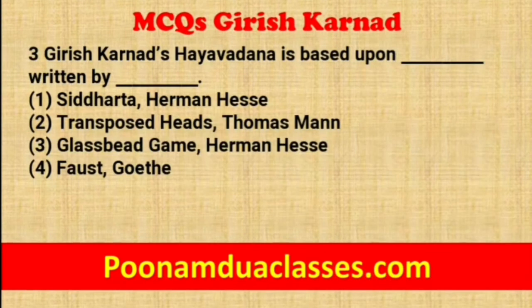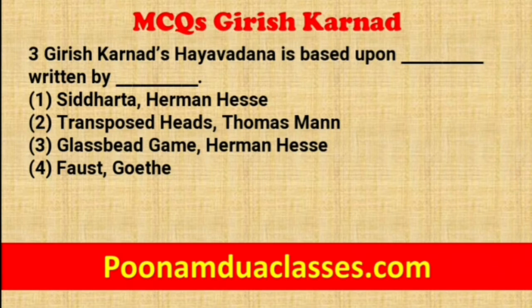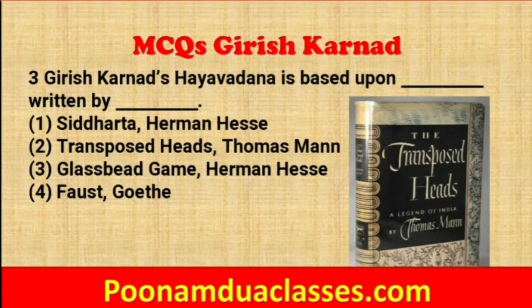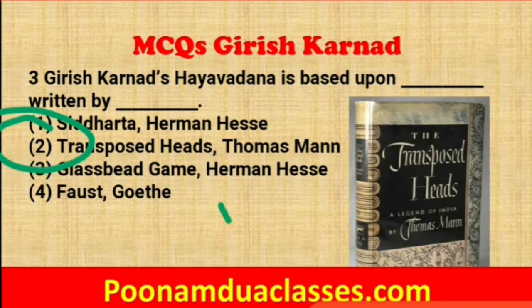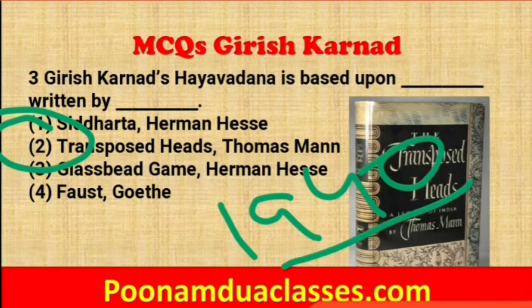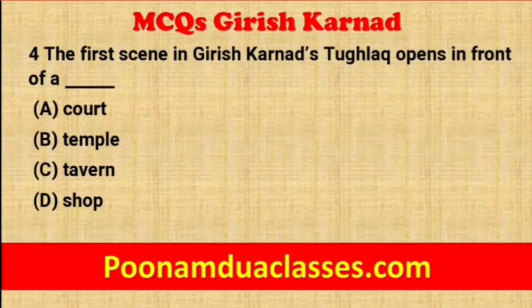Question number three: Girish Karnad's Hayavadana is based upon which work and written by whom? Option one: Siddhartha by Herman Hesse. Option two: Transposed Heads by Thomas Mann. Option three: The Glass Bead Game by Herman Hesse. Option four: Faust by Goethe. The correct answer is option number two — Transposed Heads by Thomas Mann. It is a novella written in 1940, and Hayavadana combines its plot with further inventions and new creativity by Girish Karnad.